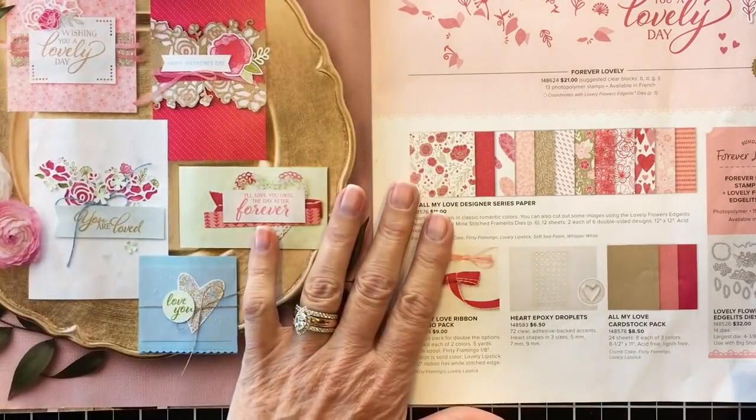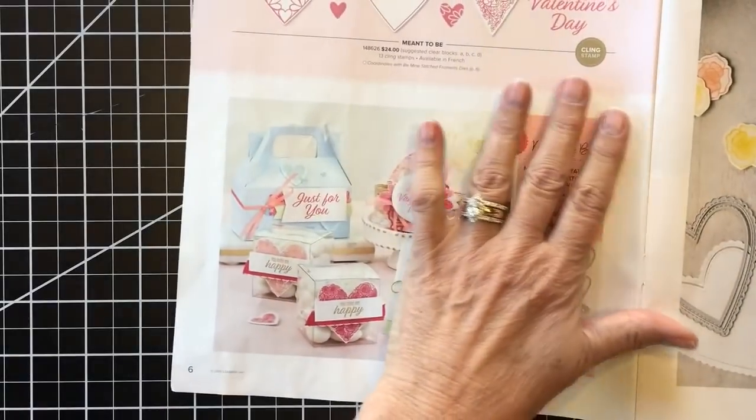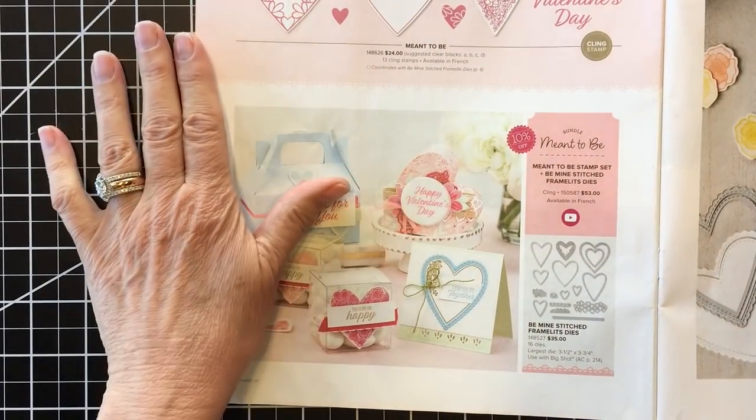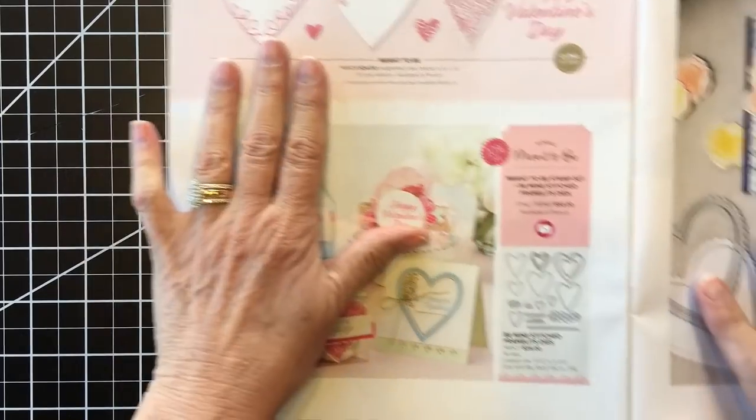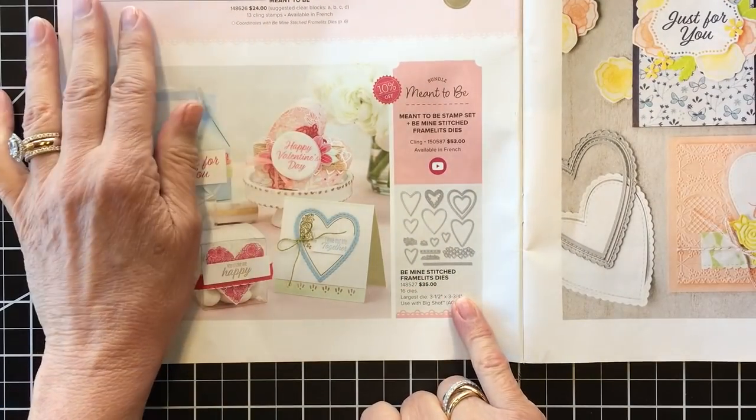But the one we're going to make together today is with the second part of the combo, a 1/8 inch flirty flamingo ribbon that I think is awesome. What makes this a mega sweet is the fact that it has a whole other bundle. I use the Meant to Be stamps that coordinate with the Be Mine Stitched Framelits Dies.